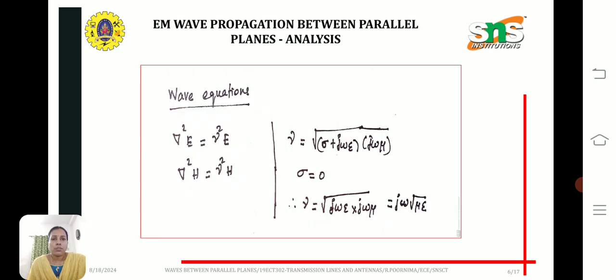Applying the wave equation: del squared e equal to gamma squared e, del squared h equal to gamma squared h, where gamma is the propagation constant. Substituting sigma equal to 0, we get j omega square root of mu epsilon.